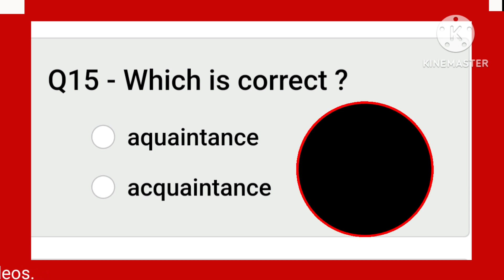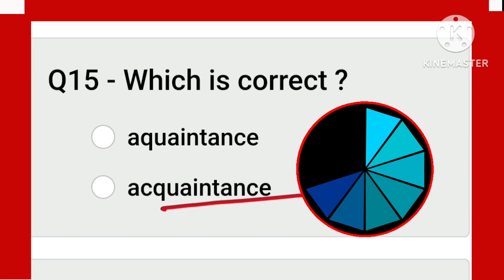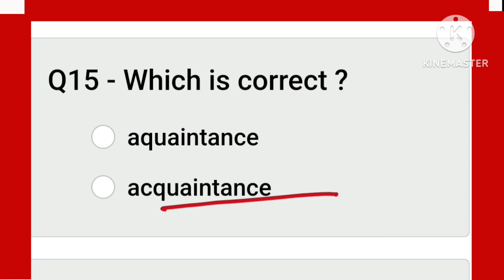Which is correct? Acquaintance — as you can see, all the spellings are the same except for the C. So 'acquaintance' — after A, C must come: A-C-Q-U-A-I-N-T-A-N-C-E. This is the correct one.